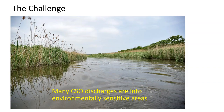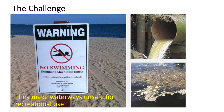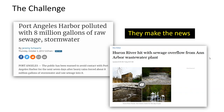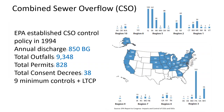The challenge is that many of the CSO discharges are into environmentally sensitive areas. They make the waterways and surface water unsafe for recreational use and can be an eyesore. Annually, about 850 billion gallons of CSO is discharged through more than 9,000 outfalls. The EPA established a CSO control policy in 1994, and there were more than 800 permits and 38 consent decrees with nine minimum controls and long-term control plans.